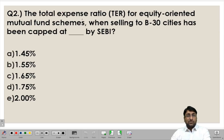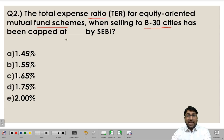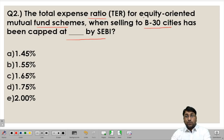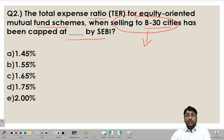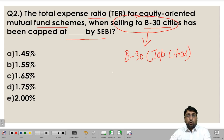Let us have a look at the next question. The total expense ratio for equity oriented mutual fund schemes when selling to B30 cities has been capped at what percentage by SEBI? The question is again related to total expense ratio, but there is a slight change — it refers to selling beyond B30 cities. B30 cities refers to the beyond-top-30 cities in our country, India, meaning any mutual fund scheme being sold to any city beyond these top 30 cities.